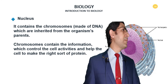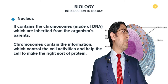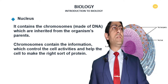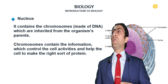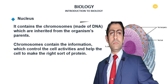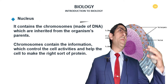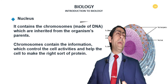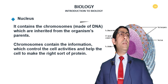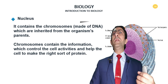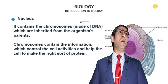Now, the CPU of the cell — the central processing unit — which is the nucleus. It contains chromosomes made up of DNA, the deoxyribonucleic acid, which is inherited from one organism to their offspring. The chromosomes contain the information, the data, the instructions which control the cell activities and help produce the right sort of proteins that determine traits — the genotype that controls the phenotype. We'll discuss this in detail in the genetics chapter.